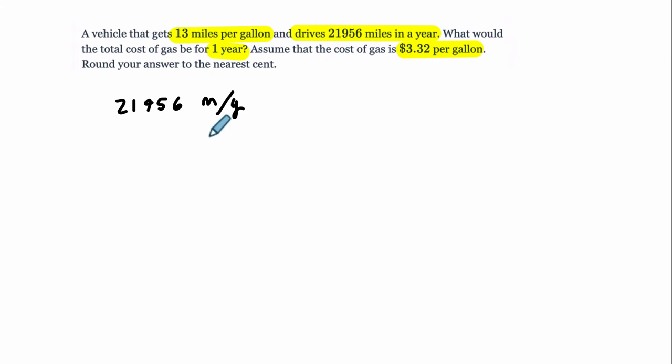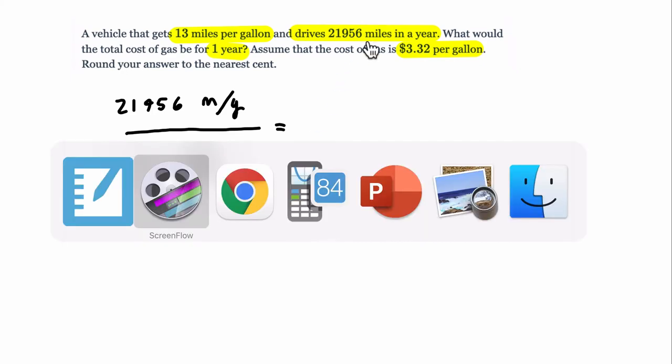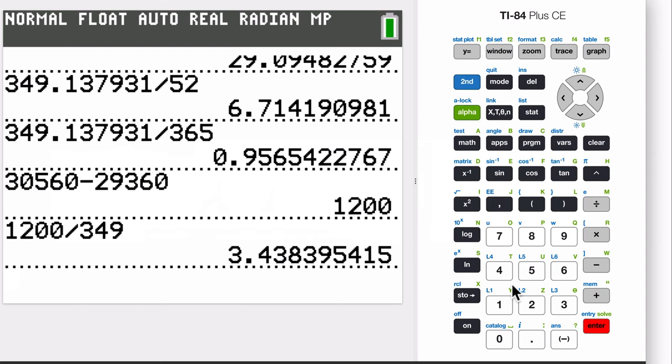So 21,956 miles per year. The first thing I want to do is divide that by my miles per gallon, 13 miles per gallon. So this is a Y and this is a G, and this will tell me when I divide these two, the miles cancel out, and what I'll have is gallons per year. That'll tell me how many gallons per year I'm using. So let's do that.